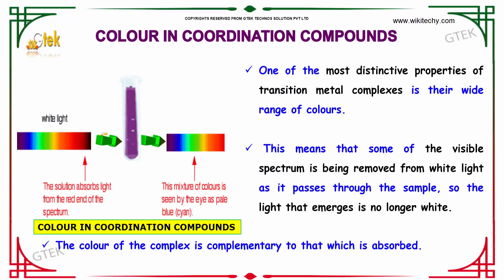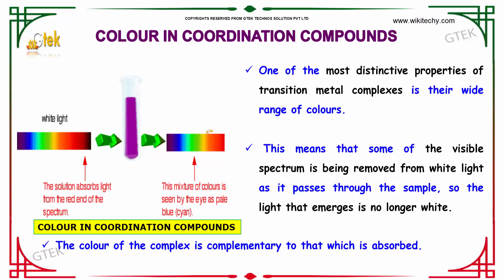One of the most distinctive features of a transition metal complex is their wide range of colors. This means that some of the visible spectrum is being removed from white light as it passes through the sample, so the white light that emerges is no longer the same.